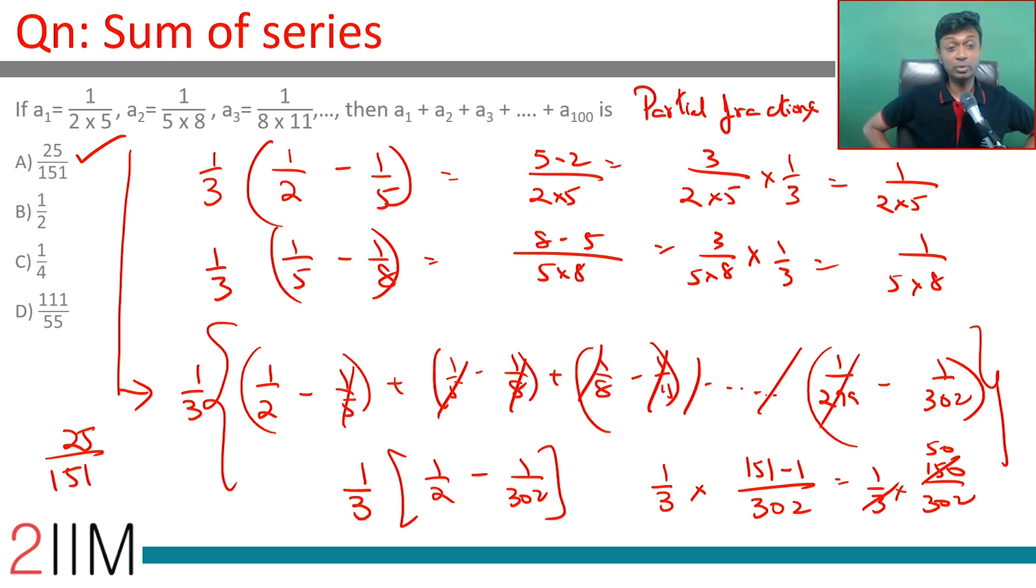A bunch of terms will get cancelled. We will be left with 1 third of 1 by 2 minus 1 by 302, that is 151 by 302 minus 1 by 302, which is 150 by 302, one third of that is 50 by 302, which is 25 by 151.